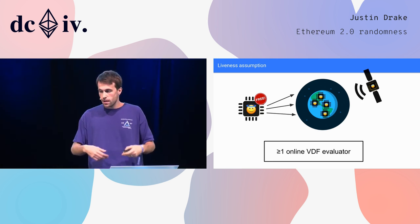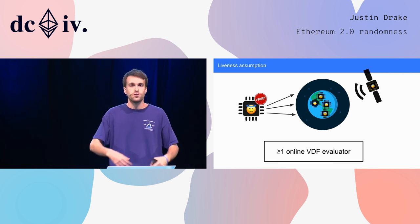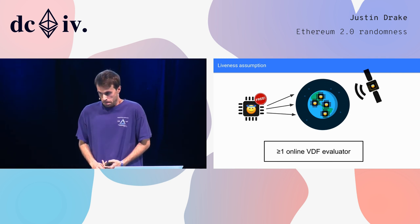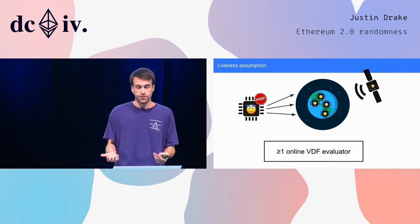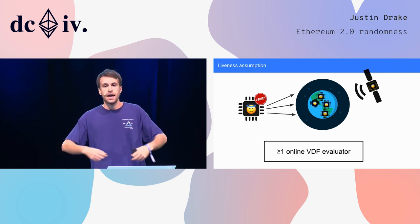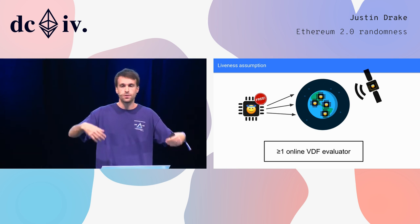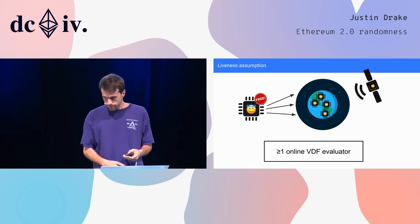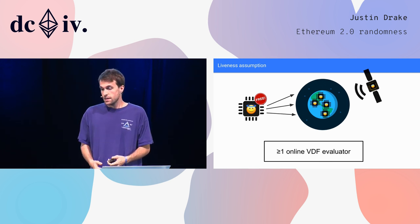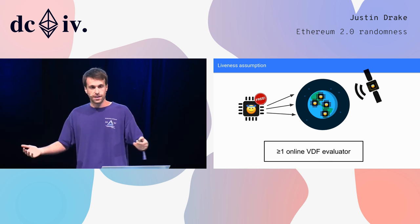We also have a liveness assumption: we need at least one person in the whole world to be running the commodity hardware. The Ethereum Foundation's strategy here is to build thousands of rigs and give them away to the community for free — to the Ethereum community, but also to third parties. If at least one of these pieces of hardware stays online, then we're good.